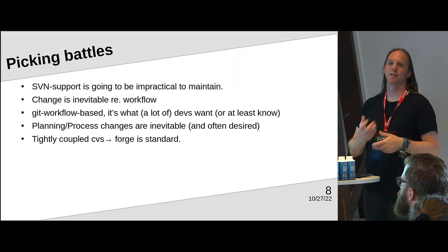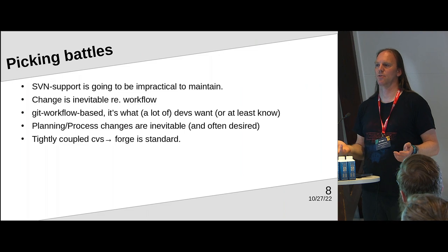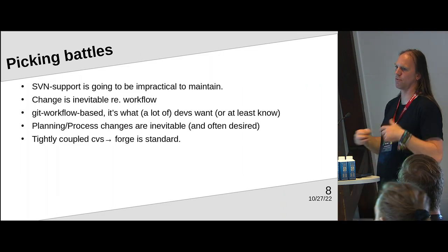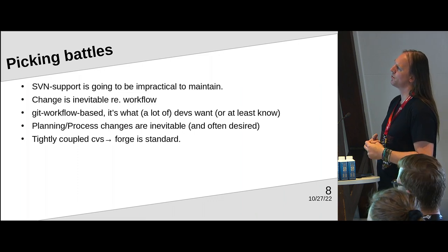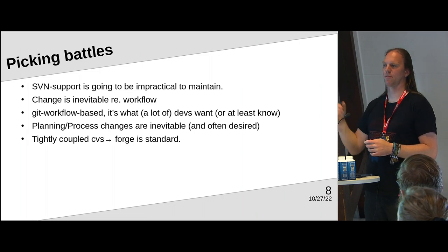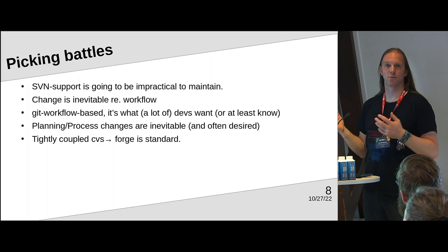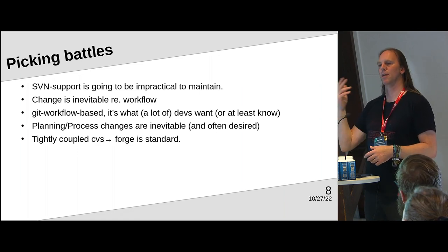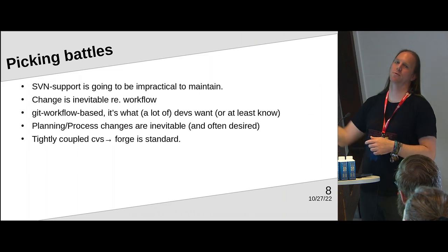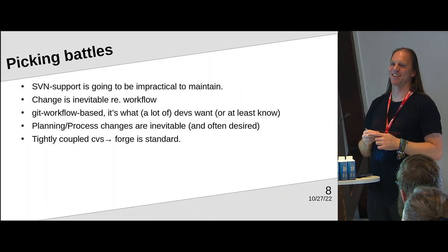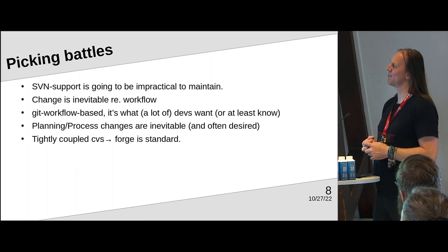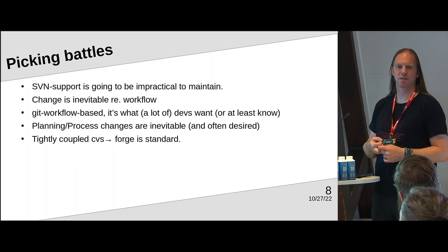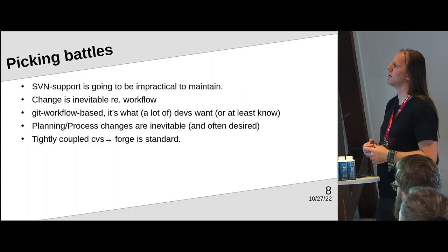Some things we decided quickly: we're not going to try to find something that can do SVN — the pool of selection is just too small — so SVN is going to drop off the list. Change is inevitable regarding workflow. This touches on the fact that the way people use Git in typical GitHub/GitLab workflows means you make a branch or feature branch and do a pull request. This is kind of not what Fabricator needs you to do, so we can't keep doing that. It doesn't mean we need to follow the whole GitHub workflow exactly, because this is an open field.